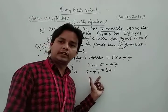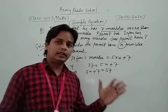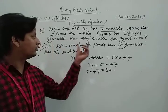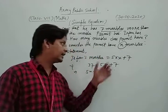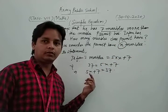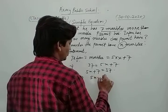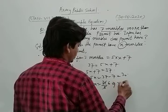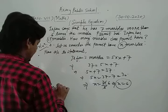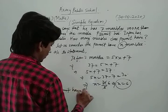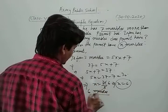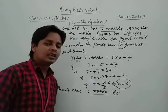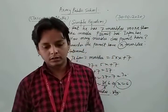Now we simplify that equation to find the value of x. We get 5x is equal to 37 minus 7, which is 30. So the value of x is equal to 30 upon 5, which is 6. Thus, Parmit has 6 marbles. This is our required solution.